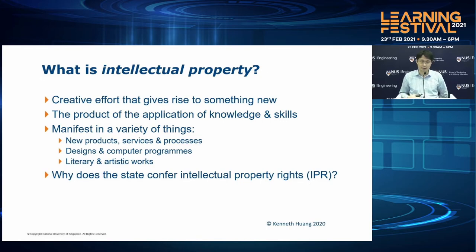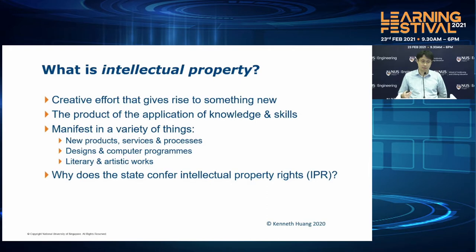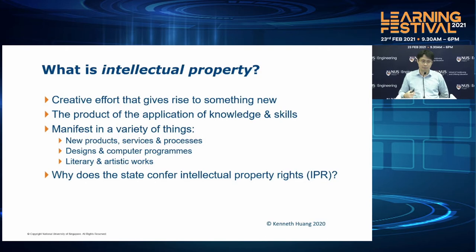A broad definition of IP: intellectual property is a creative effort that gives rise to something new — the product of application of knowledge and skills. It can be manifested in new products, services, processes, designs, computer programming codes, literary and artistic works. If you wrote a novel, that would be copyrighted to you automatically — think about Harry Potter. Of course, if you invent something new, a new technology, you can file for a patent. Patent is part of IP as well.